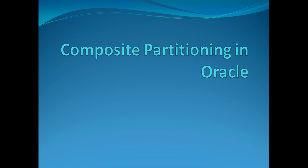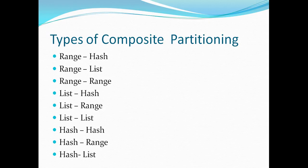Composite partitioning is nothing but mixing and matching the existing strategies we have already discussed, which will yield better results in certain cases. We will understand how these are implemented and in what scenarios they should be used. The available types are: range-hash, range-list, range-range, list-hash, list-range, list-list, and hash-hash range. The order of these partitioning types is of vital importance.